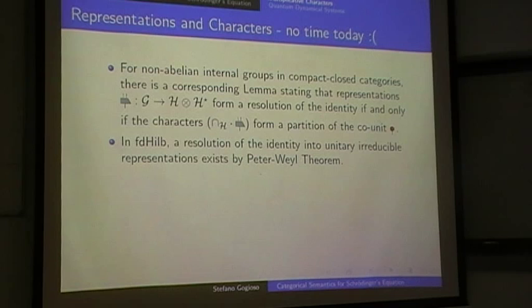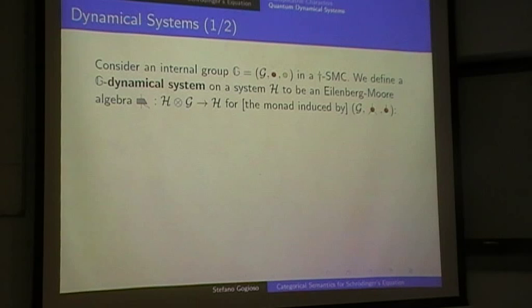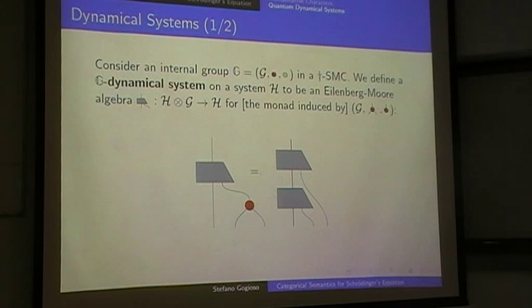What do we mean by a dynamical system? Basically we mean the quantum-classical version of a group action — an EM algebra for the monad induced by the red monoid, i.e., something that satisfies an appropriate multiplication law and an appropriate unit law. If you consider it only on the group elements, the green classical points, that is exactly a group action. Those are the two defining equations of a group action, because the red dot is just a group unit.